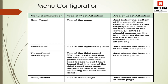For a one-panel menu card, the top of the page has the most attention and just below the bottom of the page has the least attention. If a one-panel menu covers display menu items on both sides of the cover, all entries should appear on the front side, as those on the back will not receive as much attention. For a two-panel menu card, the area of most attention is the top of the right side panel, while just above the bottom of the left side panel gets the least attention.